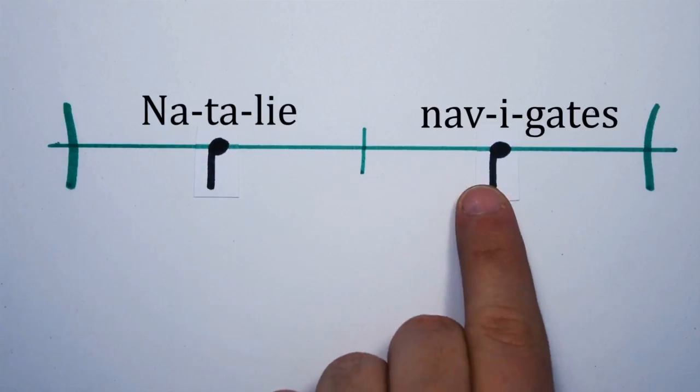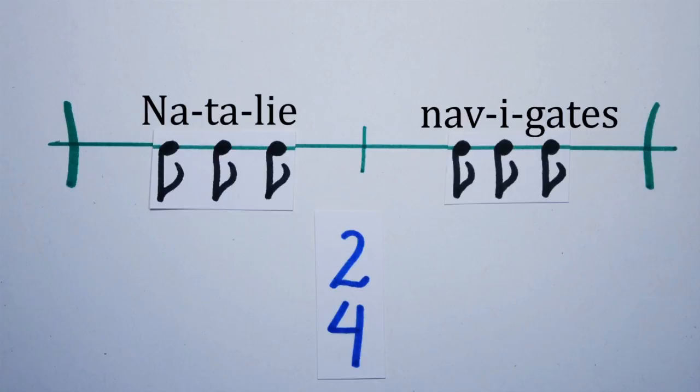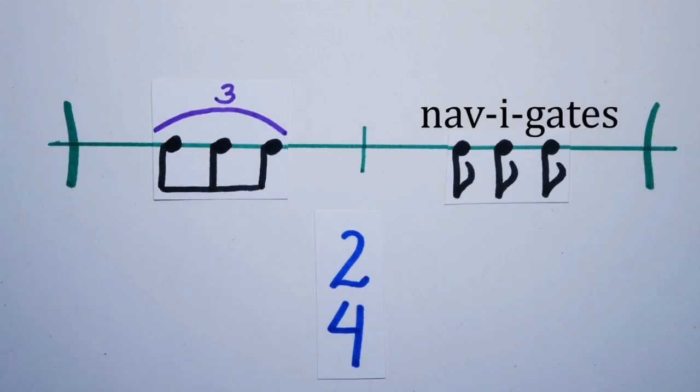Natalie navigates. We have the option of keeping things in a time signature of two four and then to split each quarter note into three equal subdivisions, one per pulse. The way to do this is by creating a triplet for each quarter note.